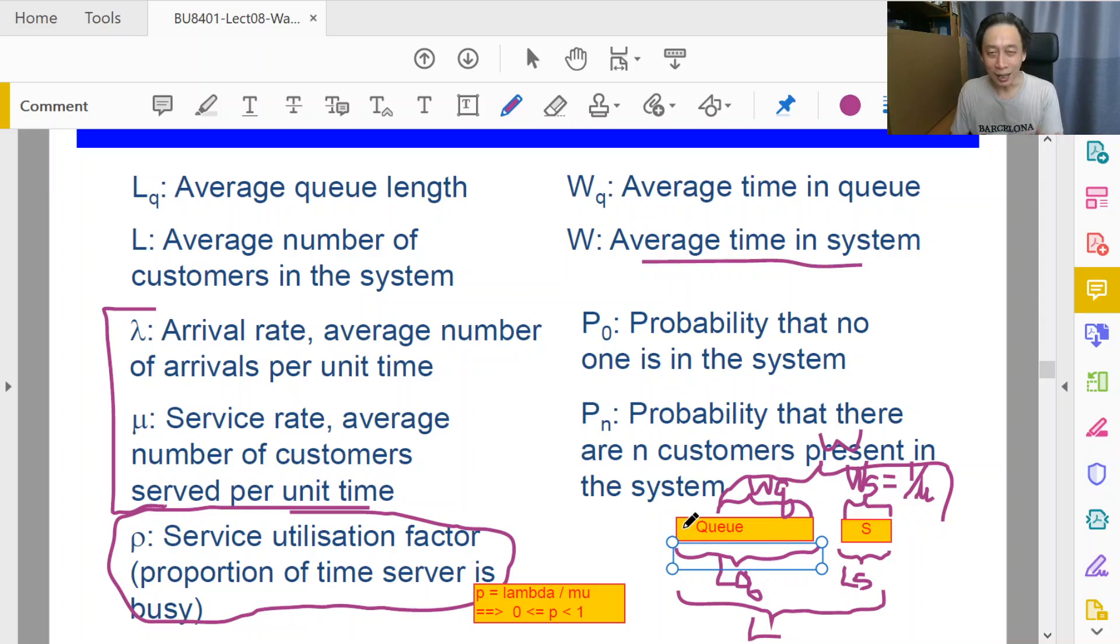If we go into a clinic to see a doctor, we have to wait to see doctor. And if that's it after seeing doctor, no medicine, so we just go home. In that case, W represents the average amount of time to go into the clinic, queue up, and then see the doctor and then exit the clinic.